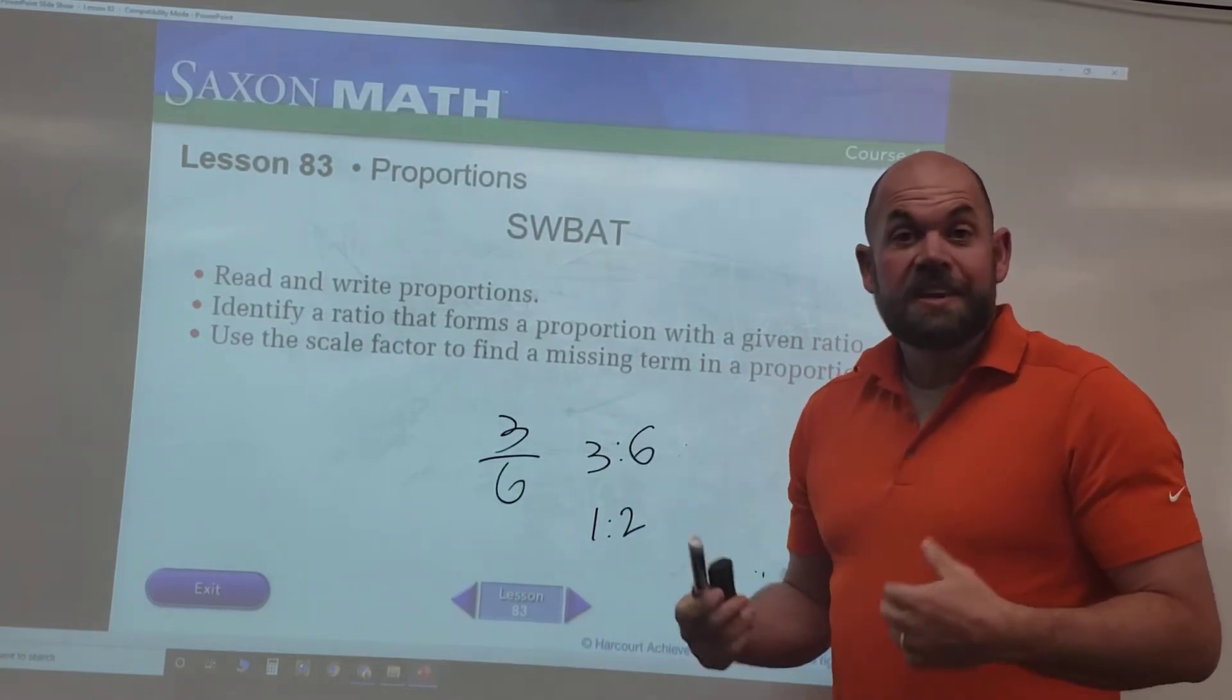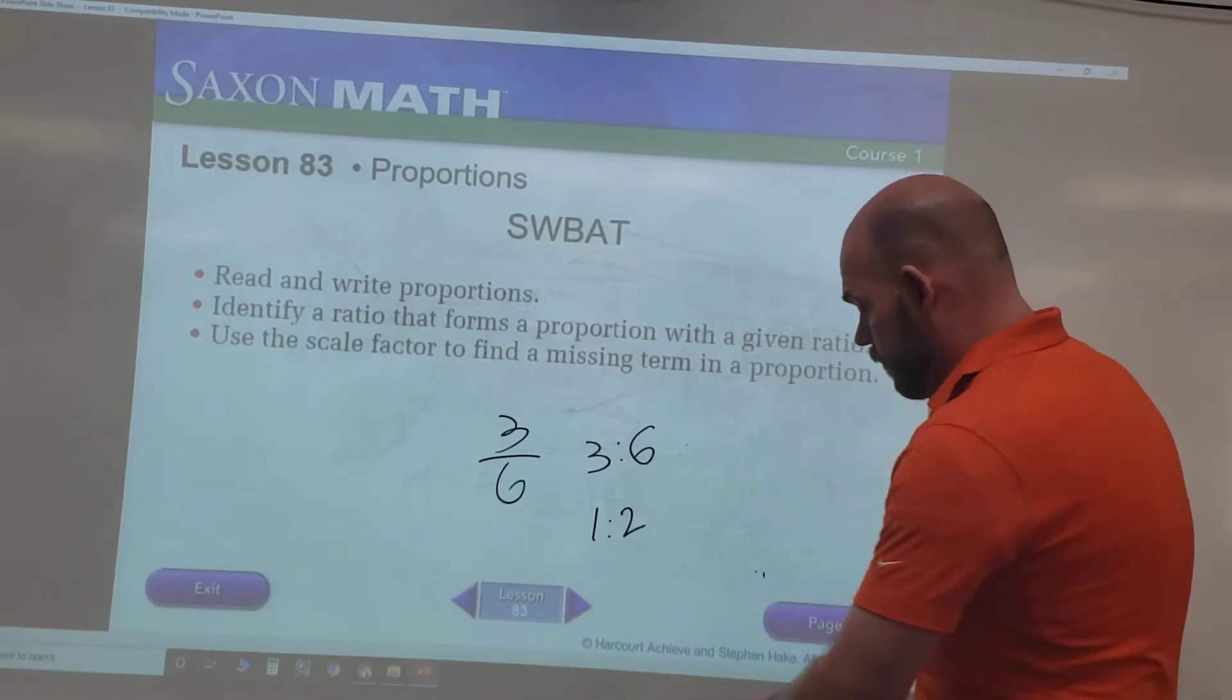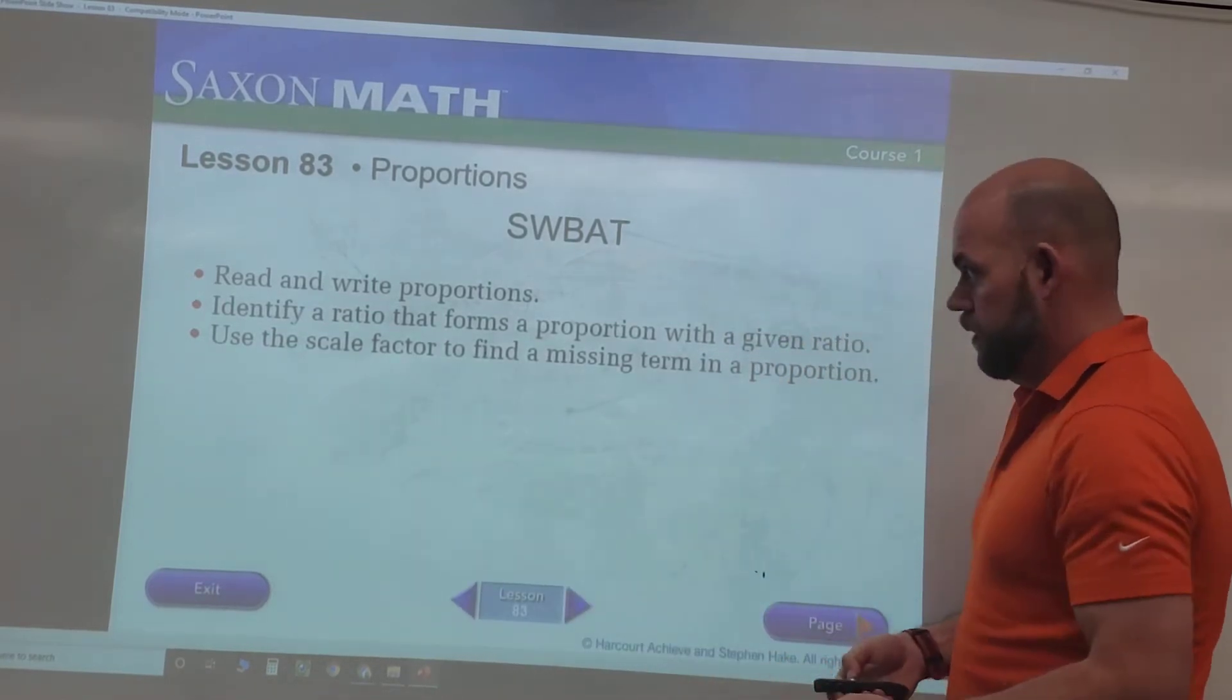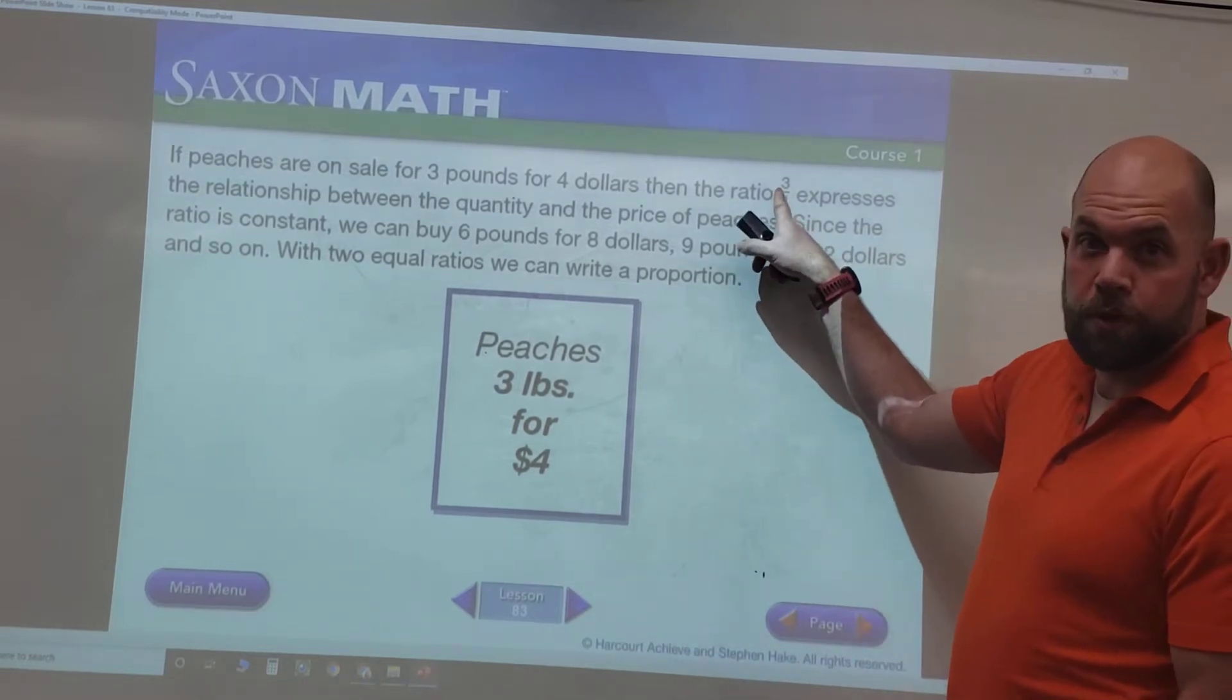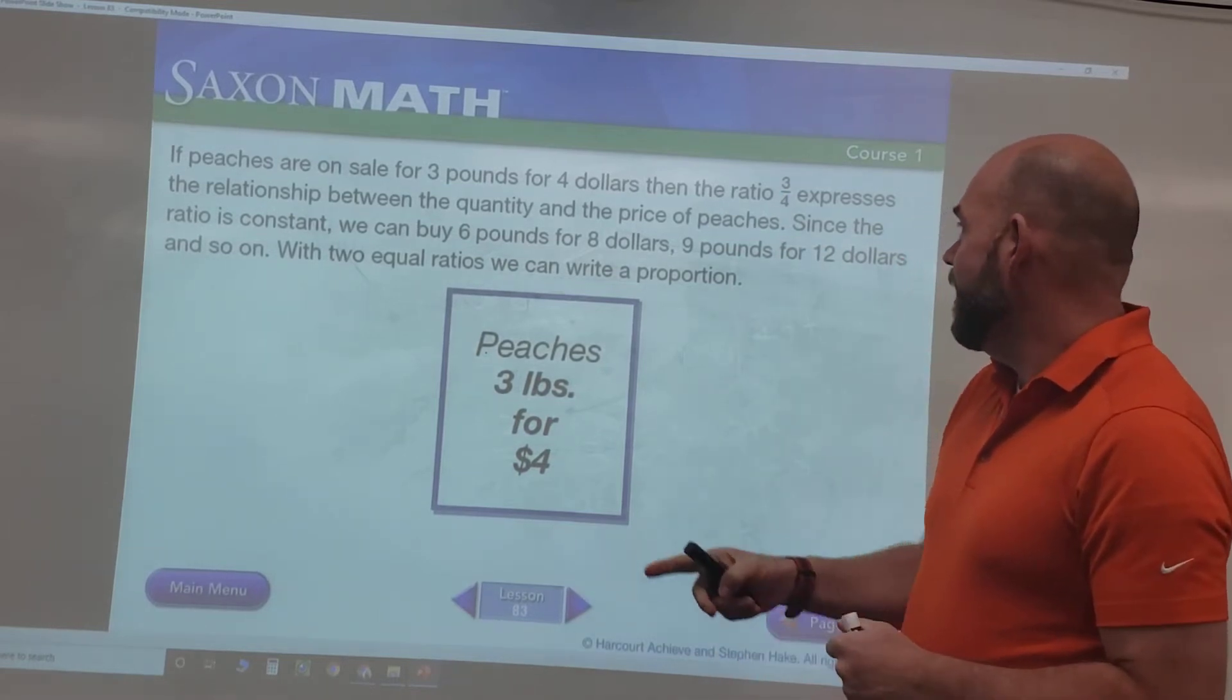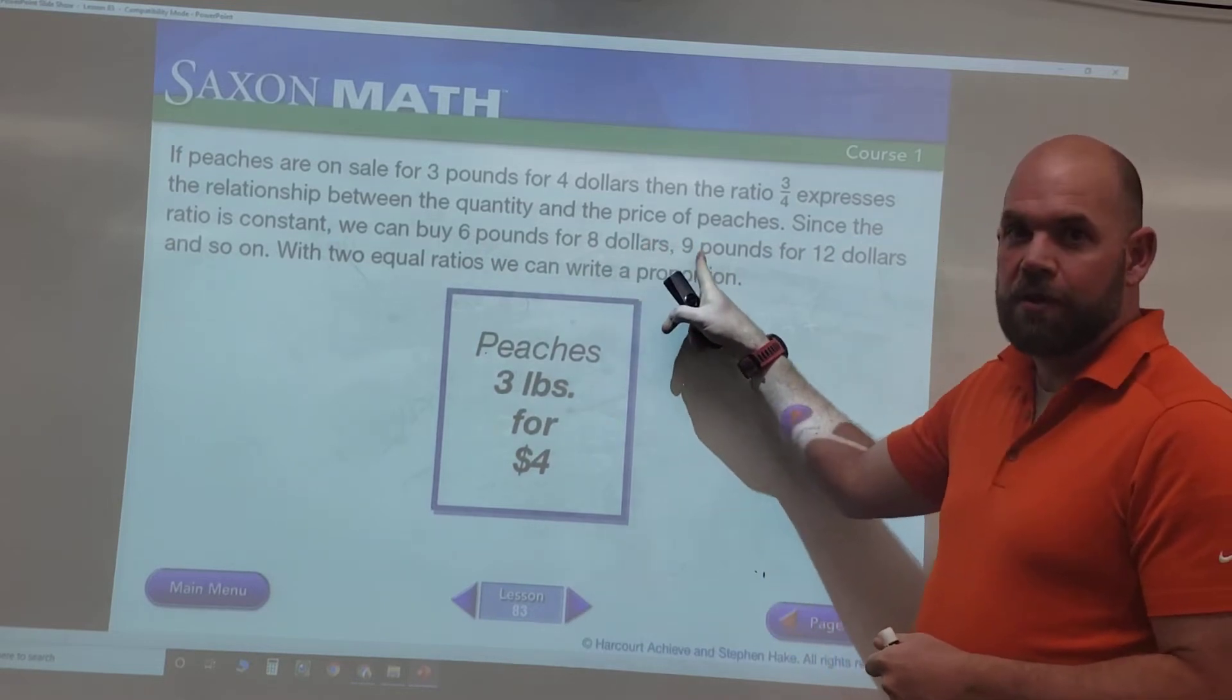Today we're going to practice that with some unknown variables. If we have peaches and they're going for three pounds for four dollars, we'd write that as a 3/4 expression. Now that's the same as buying six pounds for eight dollars, nine pounds for twelve dollars.